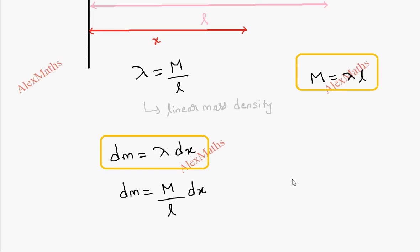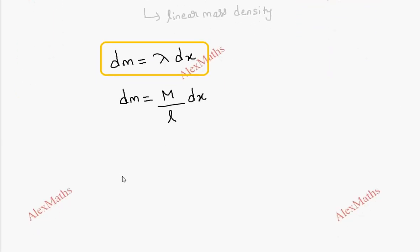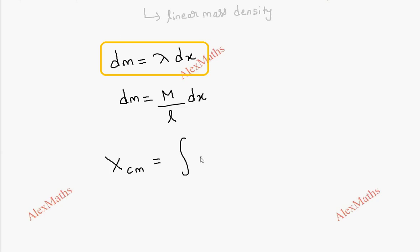The center of mass expression is: x_cm equals the integral of x dm divided by the integral of dm.